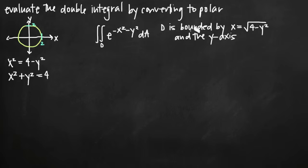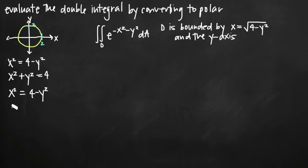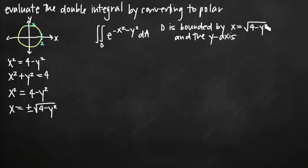The important thing to remember is that the region D was bounded by x equals the positive square root of 4 minus y squared. This is really important because when we solve x squared plus y squared equals 4 for x, we get x equals positive or negative square root of 4 minus y squared. But the original equation given as a bound was only the positive square root, which tells us we're dealing with only positive x values — not the entire circle, just the right-hand half circle.